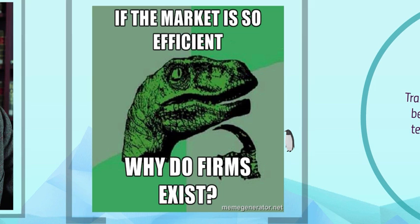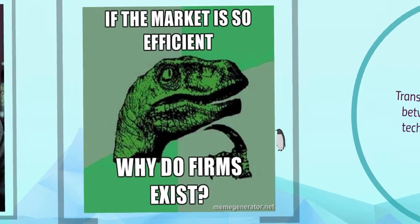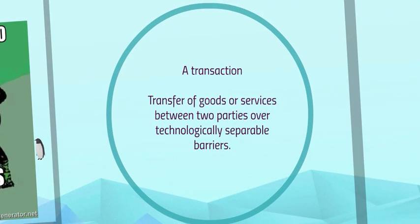But if the market is so efficient, why do we even need firms? He concluded that it was in order to reduce transaction costs. A transaction is essentially the exchange of a good or a service between two parties that are far away from each other, and a transaction cost is the cost of doing that.